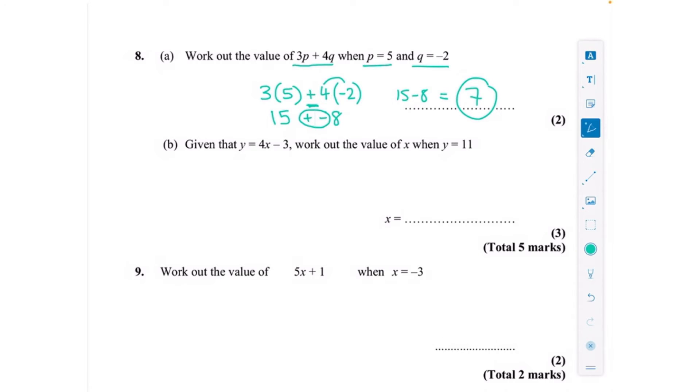Given that y is 4x minus 3, work out the value of x when y is 11. So I'm going to take the fact that I know that y is 11 and put it into here, so 11 equals 4x minus 3. Now this is actually an equation because we've now got to solve it and work out what x is.